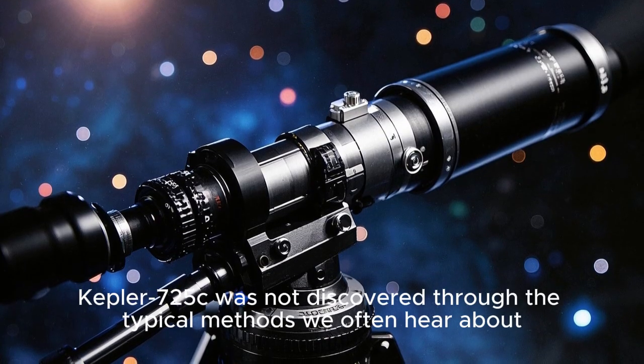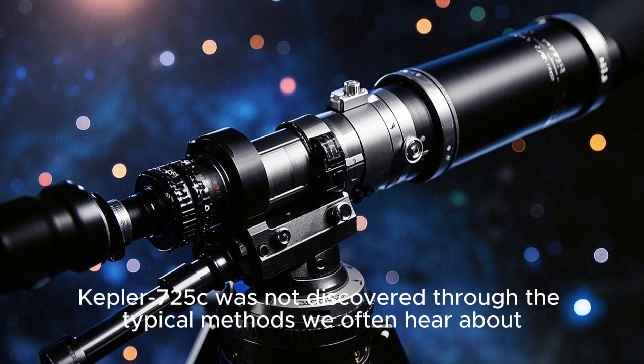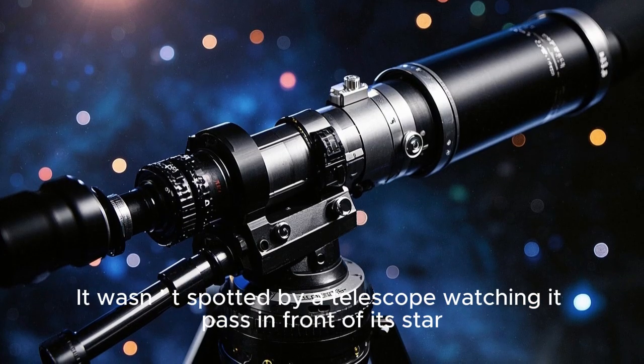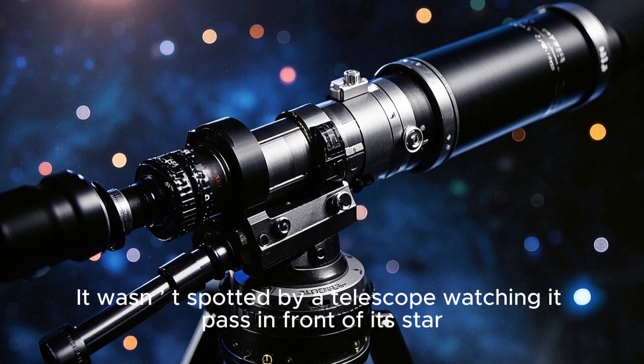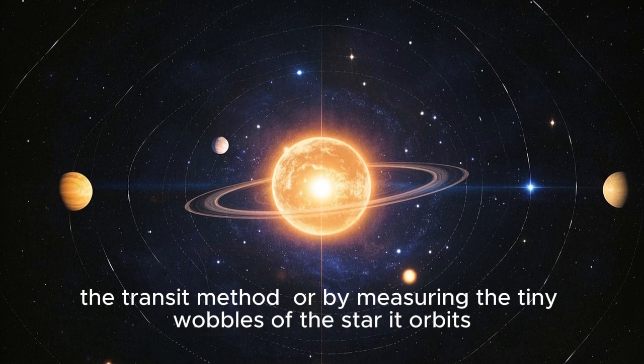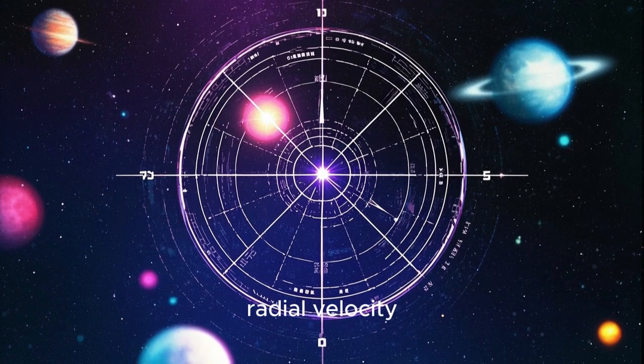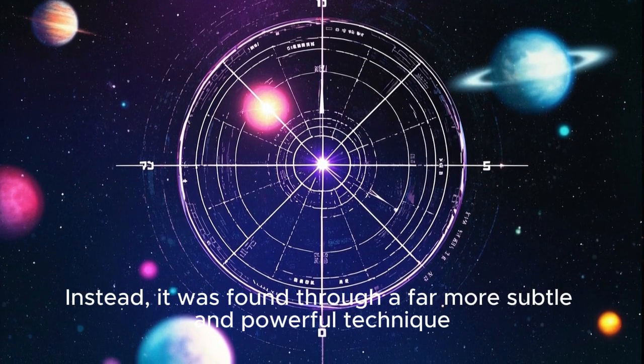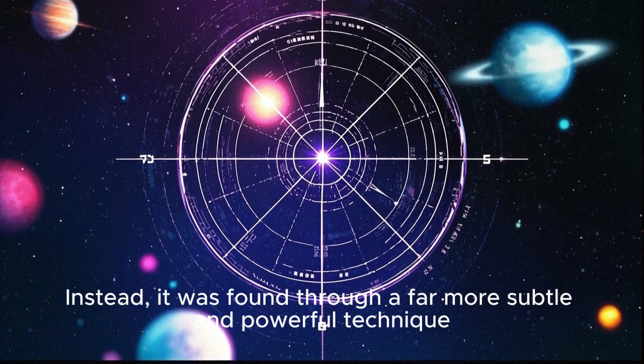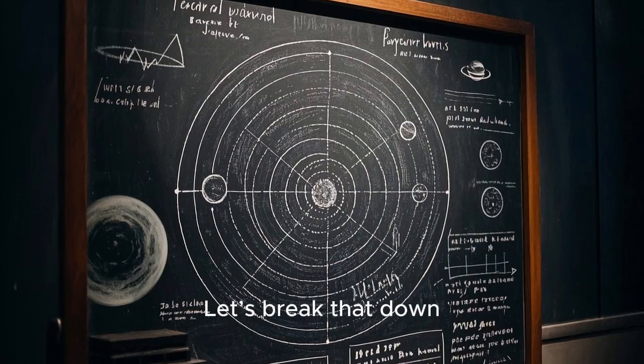Kepler-725c was not discovered through the typical methods we often hear about. It wasn't spotted by a telescope watching it pass in front of its star, the transit method, or by measuring the tiny wobbles of the star it orbits, radial velocity. Instead, it was found through a far more subtle and powerful technique called Transit Timing Variation, TTV. Let's break that down.